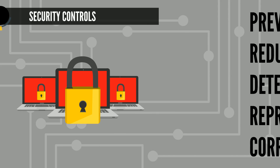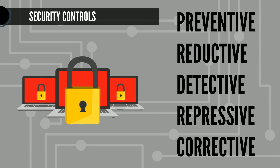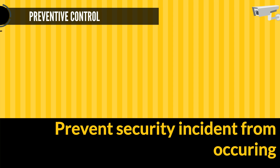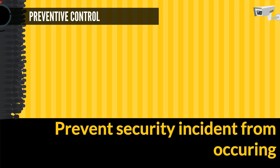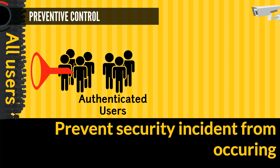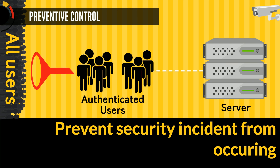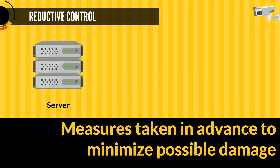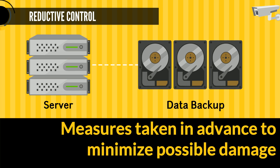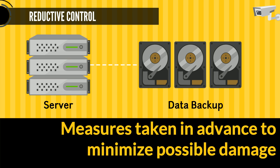Let us take a look at the various security controls with some examples. Allowing authenticated users to access information on a server, preventing everyone else from accessing it — enabling access control on servers is preventive. Taking backup of your information on a regular basis to prevent loss of information due to some unforeseen incident means that even if data is lost, most of it can be recovered.